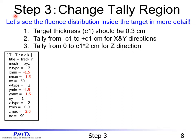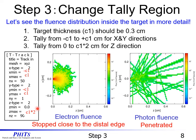Let's go on to Step 3: change the tally region. In this step, let's see the fluence distribution inside the target in more detail. First, the target thickness C1 should be set to 0.3 centimeters. Next, please change the tally from minus C1 to plus C1 centimeters for X and Y directions, and tally from 0 to C1 times 2 centimeters for the Z direction. The changed parameters are shown in the sample file in red. The figures in track.eps show electron and photon fluences after the change.